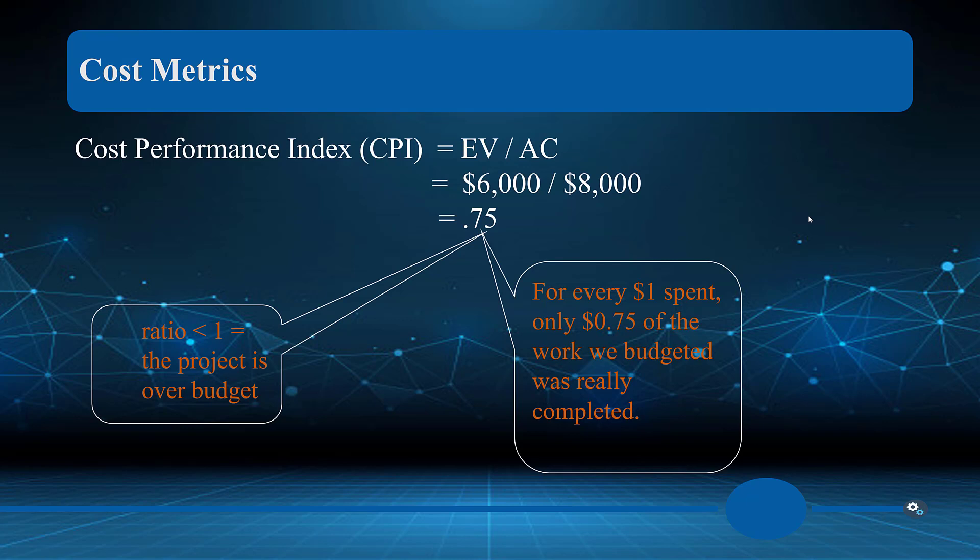The better way to look at this is to get a percentage or ratio — the cost performance index (CPI). If we take six thousand divided by eight thousand, we get 0.75, meaning for every one dollar we spend, we're only getting seventy-five cents of the work we budgeted actually completed.